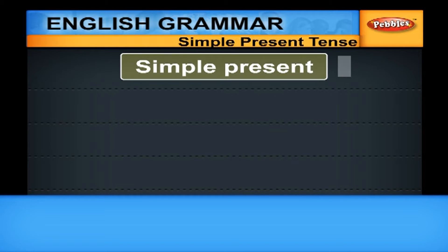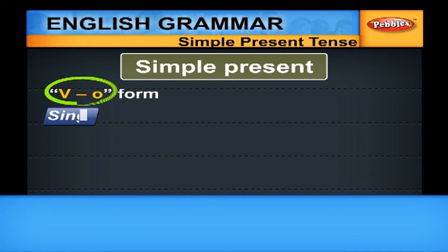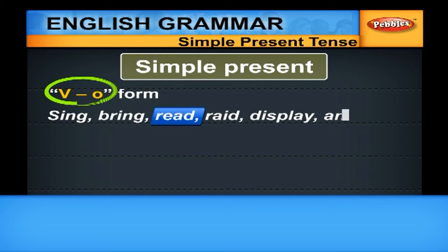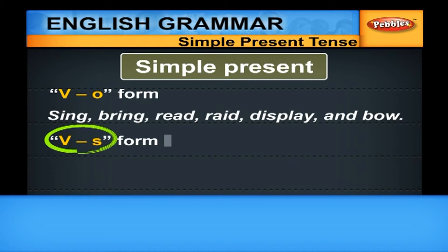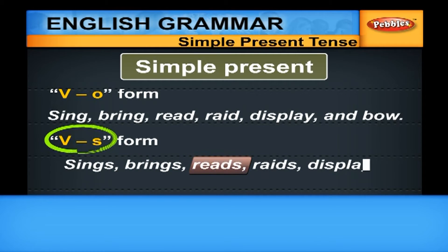You have to be a bit careful when it comes to the simple aspect. In the simple aspect, we have to use the base form of the verb — that is the V0 form — for example: SING, BRING, READ, DISPLAY, BOW. Then you have to use the VS form also, where you add S to the root verb: SINGS, BRINGS, READS, DISPLAYS, BOWS.